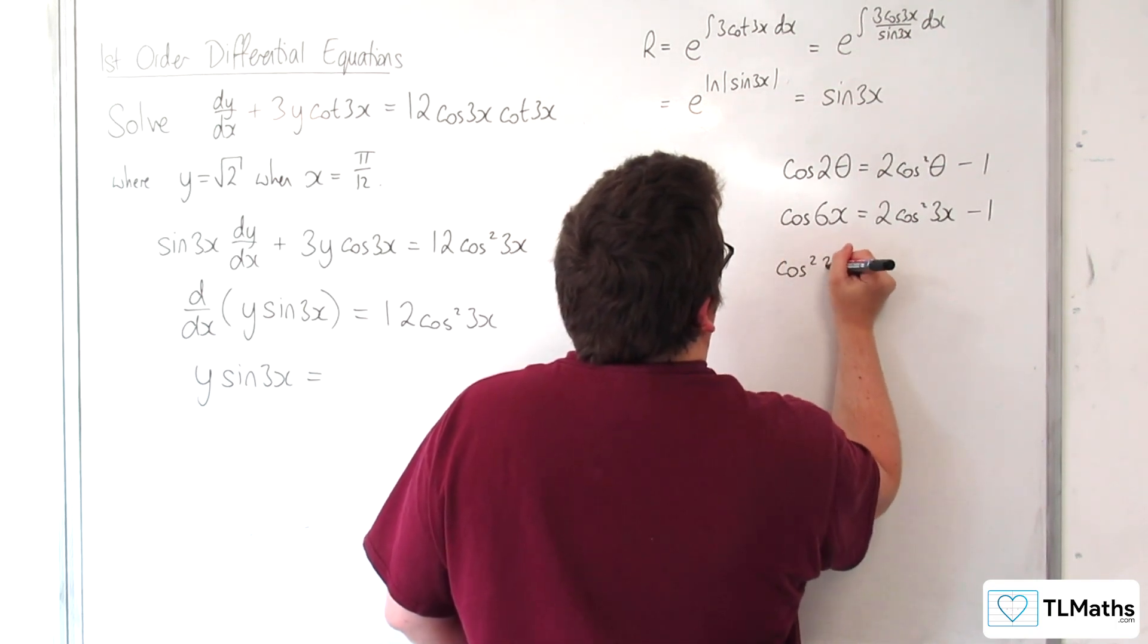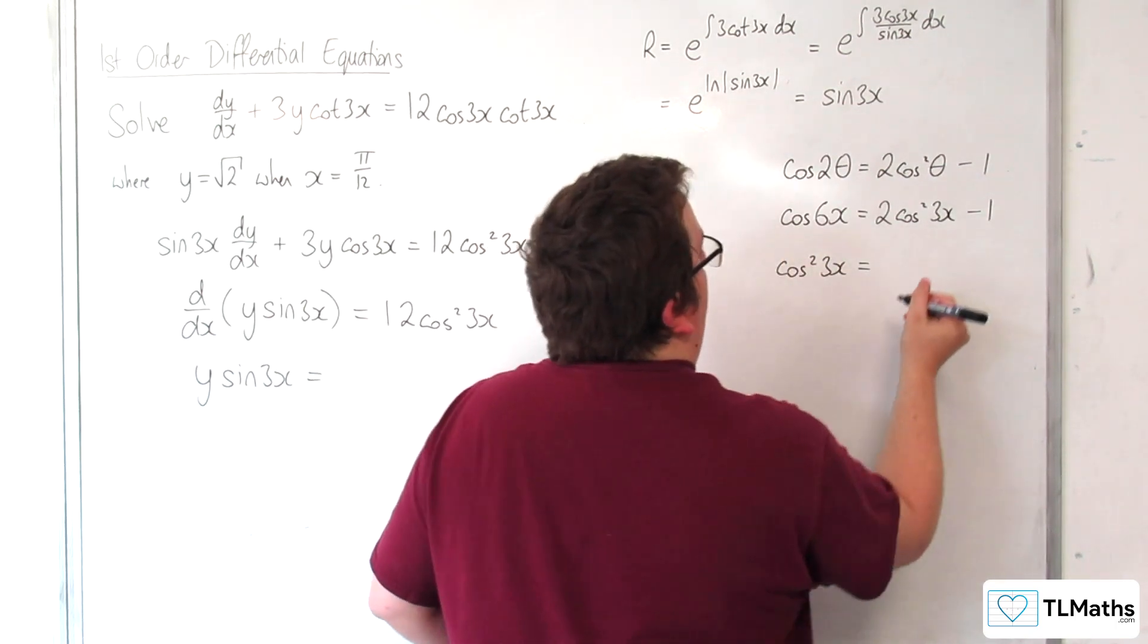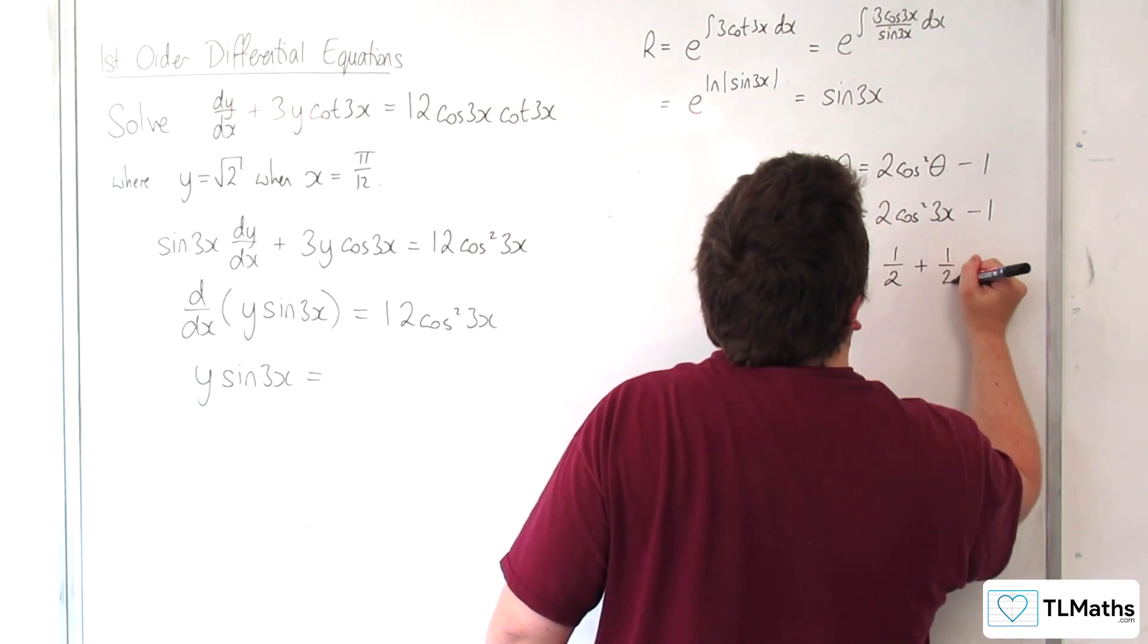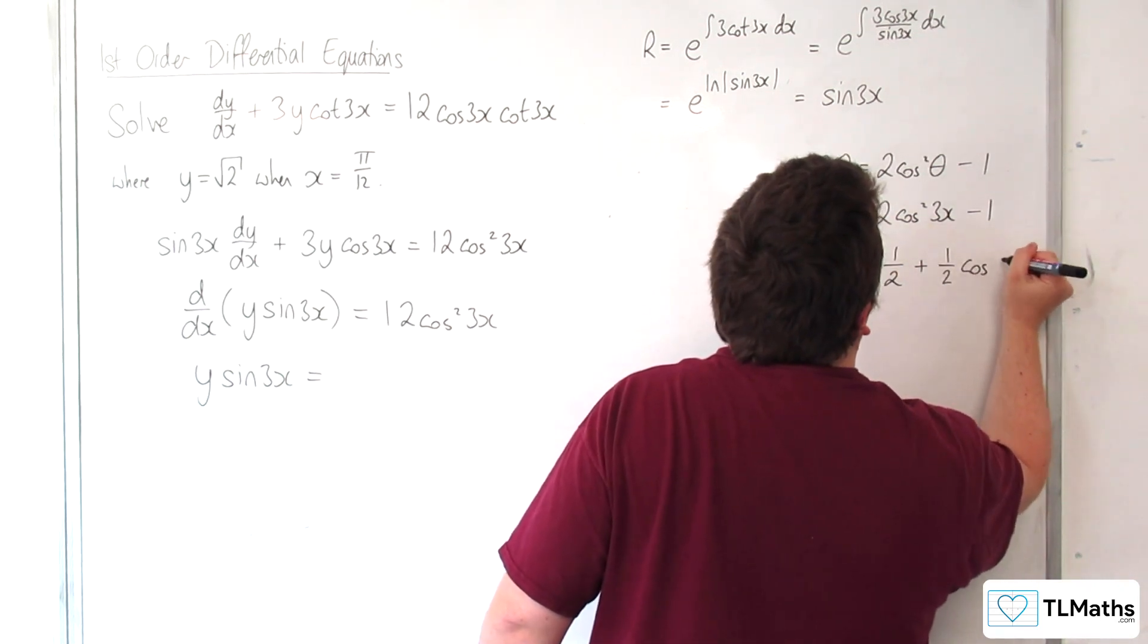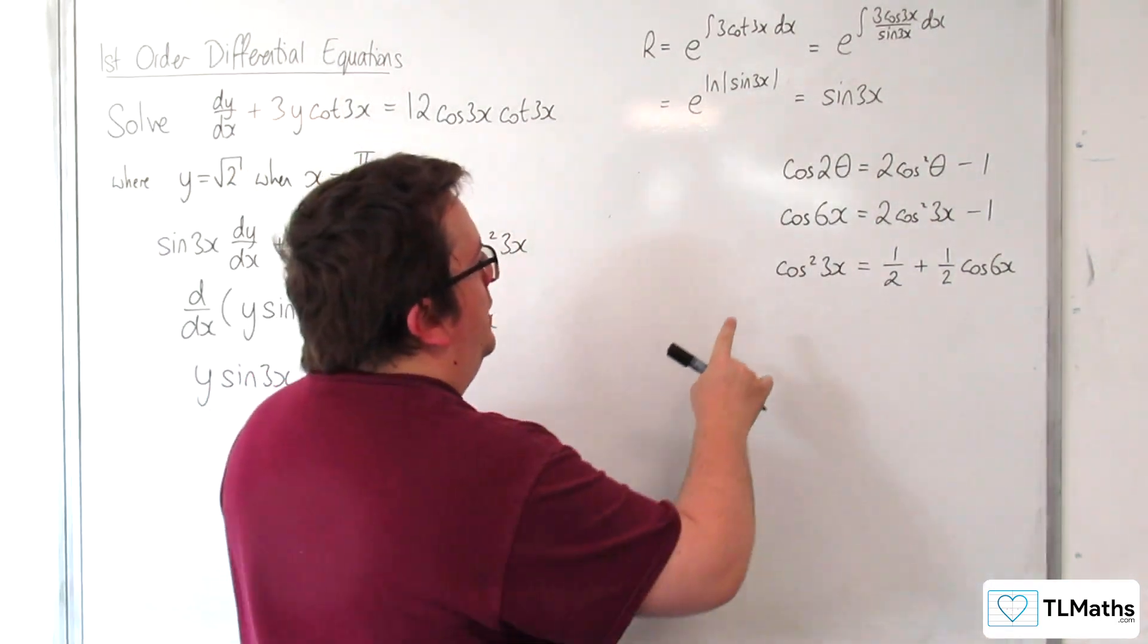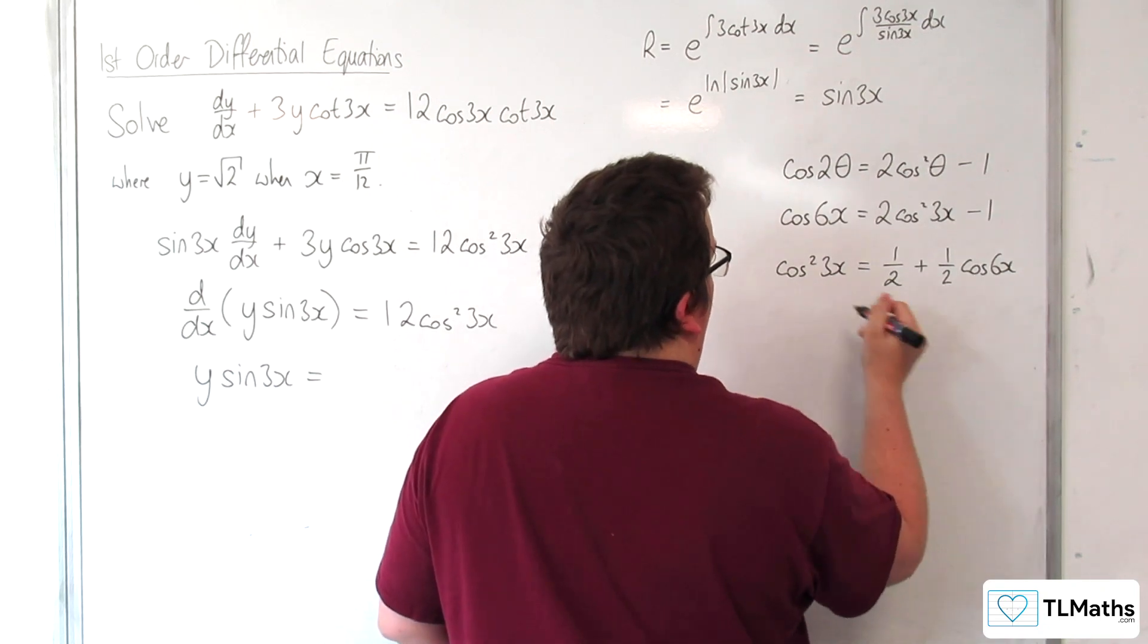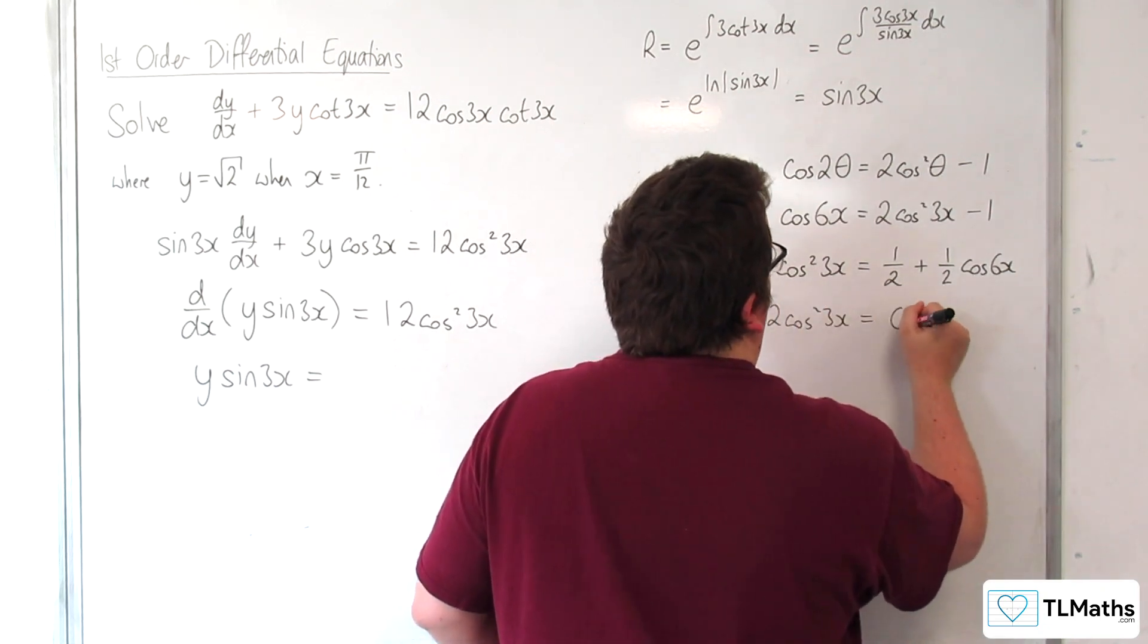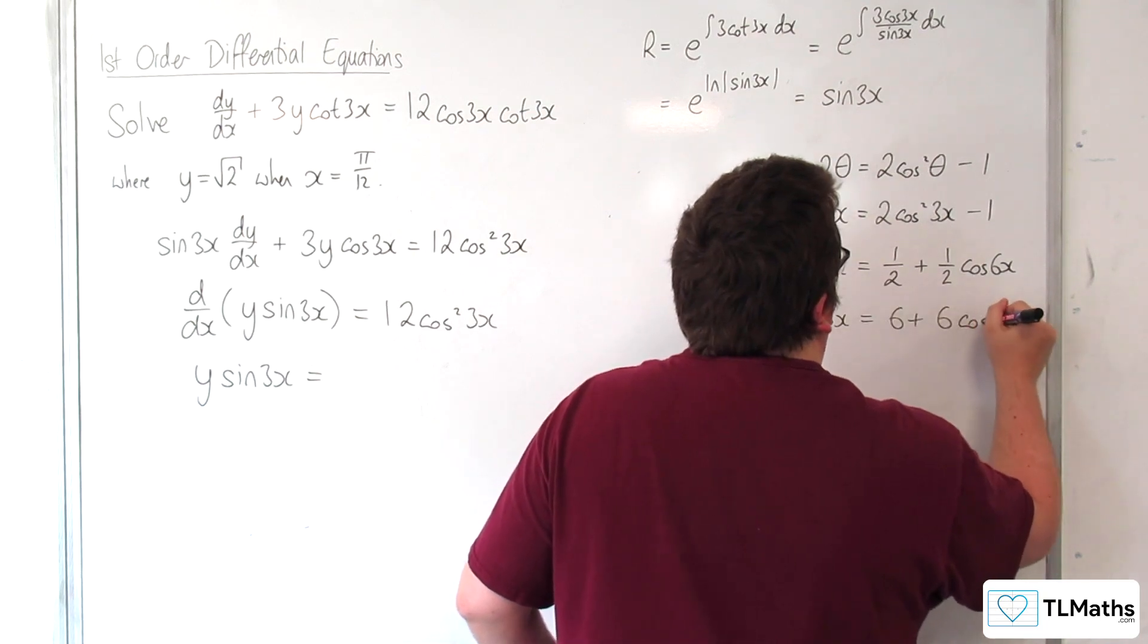Rearranging, cosine squared 3x would be 1 half plus 1 half of cosine 6x. But we've got 12 cosine squared 3x, so if I multiply through by 12, we get 6 plus 6 cosine 6x.